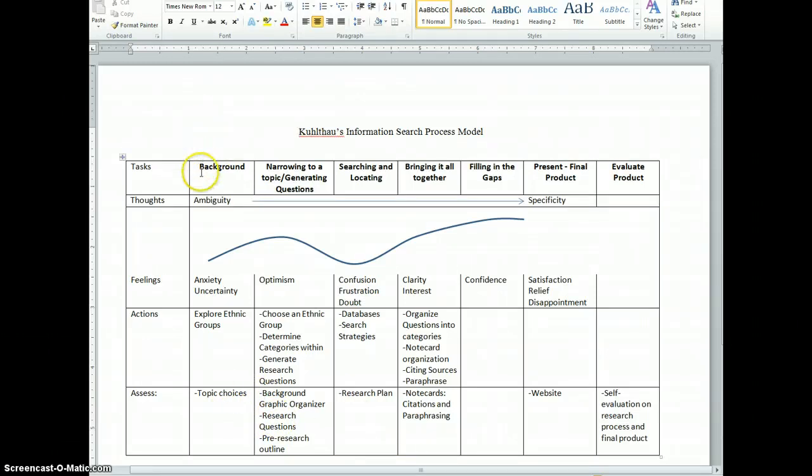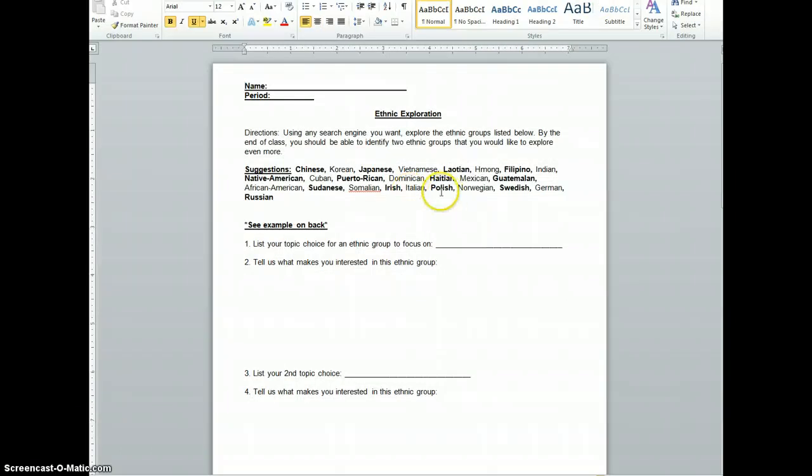So, today we are on this background step. Our thoughts are ambiguous. We may be feeling anxious and uncertain. What we'll basically be doing today is exploring ethnic groups. And we'll do that by looking at this assessment of the topic choices. So that is what this document is here.